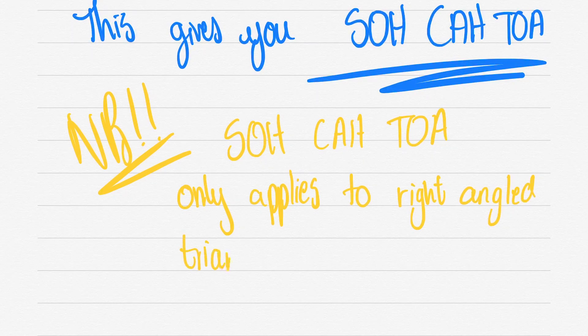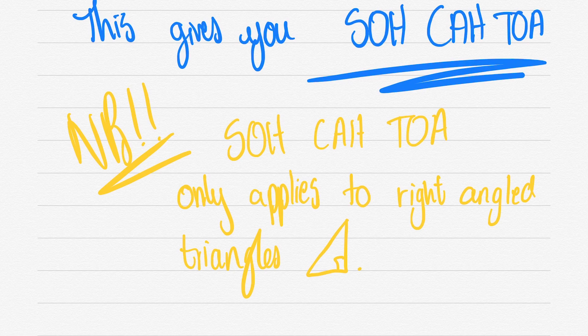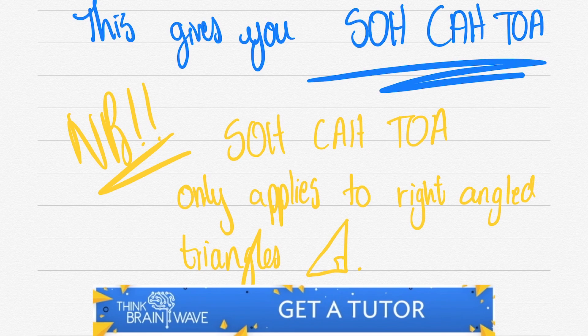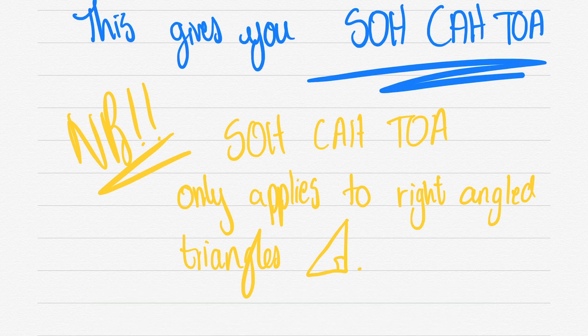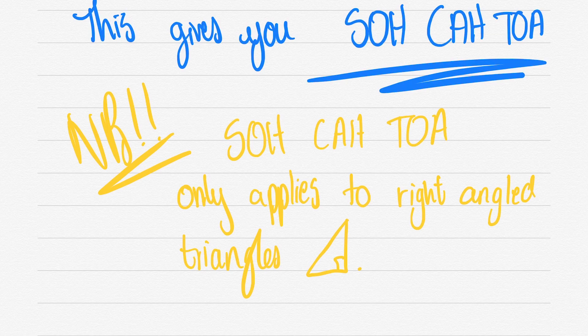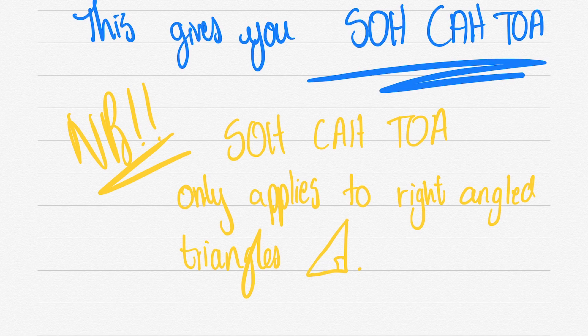So we have SOH CAH TOA. It only applies to right angled triangles. I'm really taking time on this video as I'm sure that this is going to be a video that you watch a couple of times. This is a very important part of your trigonometry. Trig is really easy. It only depends on whether you know your rules or not. If you don't know your rules, unfortunately it's not going to be the easiest of subjects or topics to pass. But if you do know your rules, easy game. Now we know that it's only right angled triangles and we're only going to focus on these triangles.